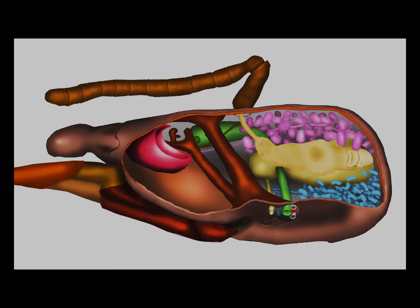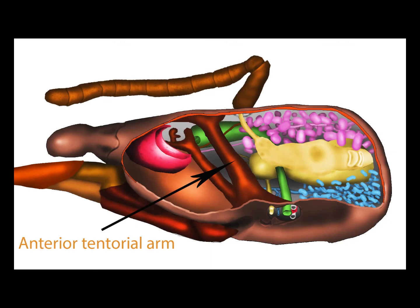Let us look at these glands in a diagram. This is a diagram of the side of a worker bee's head. The left eye and much of the left side of the head have been cut away. The muscles have also been removed, and we are left with a diagram of the internal organs. The thick brown structure running from front to back is part of the internal skeleton of the head — the anterior tentorial arm.